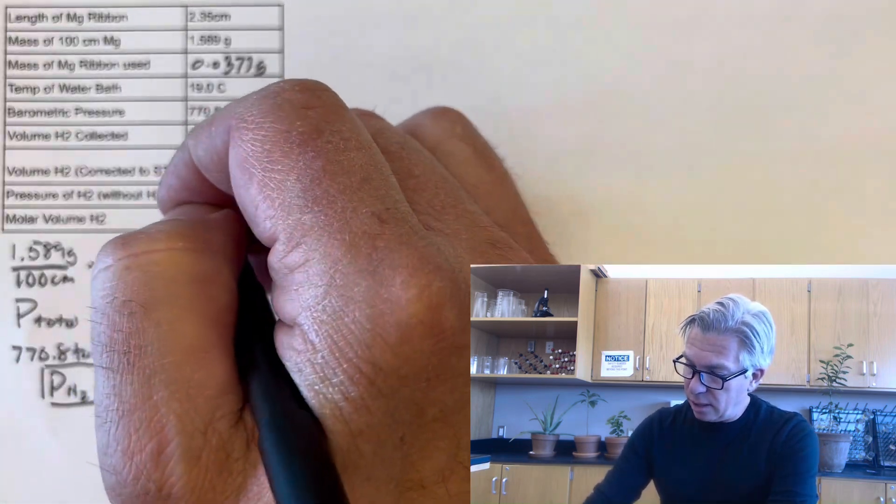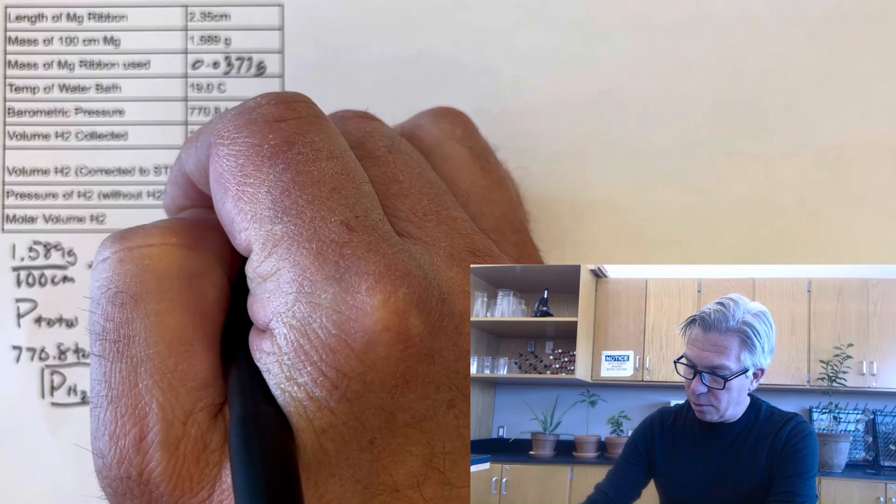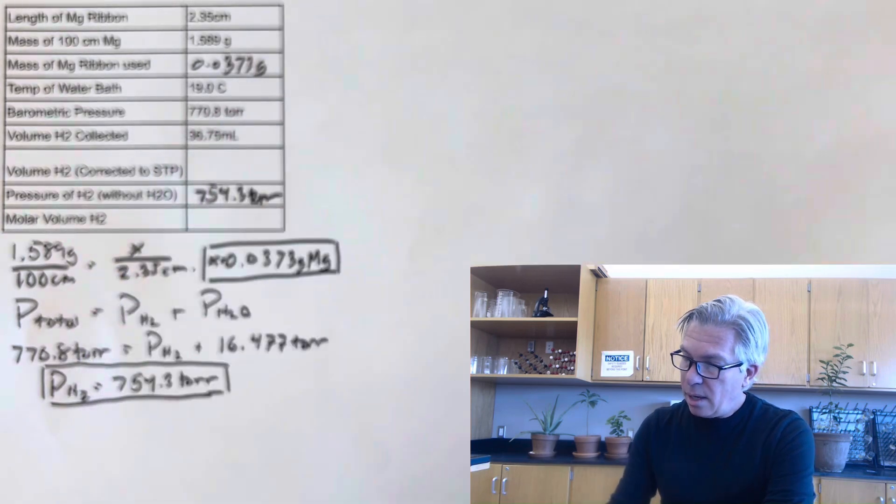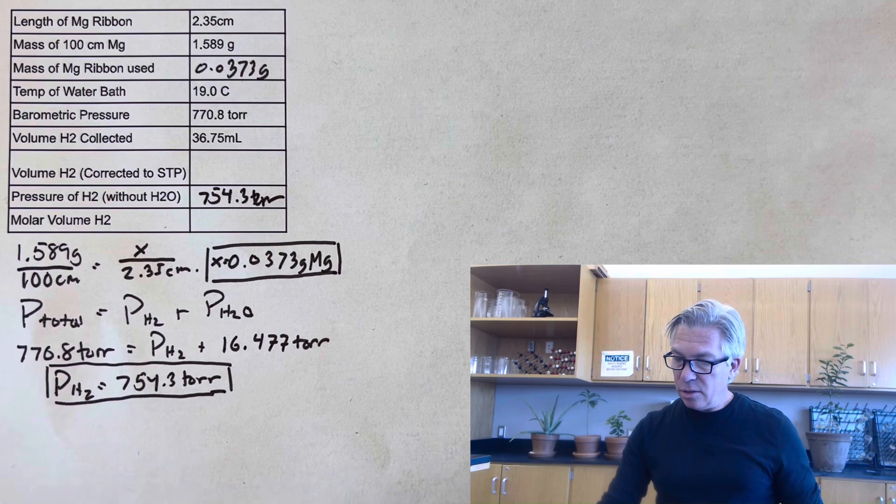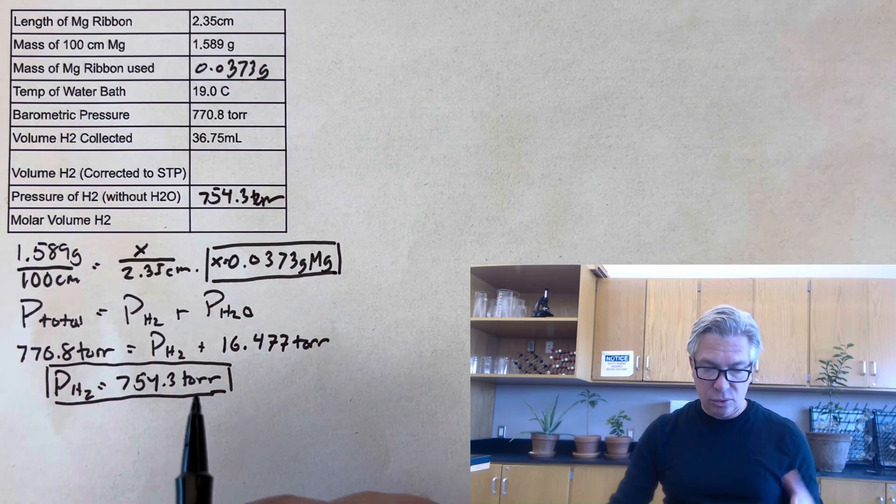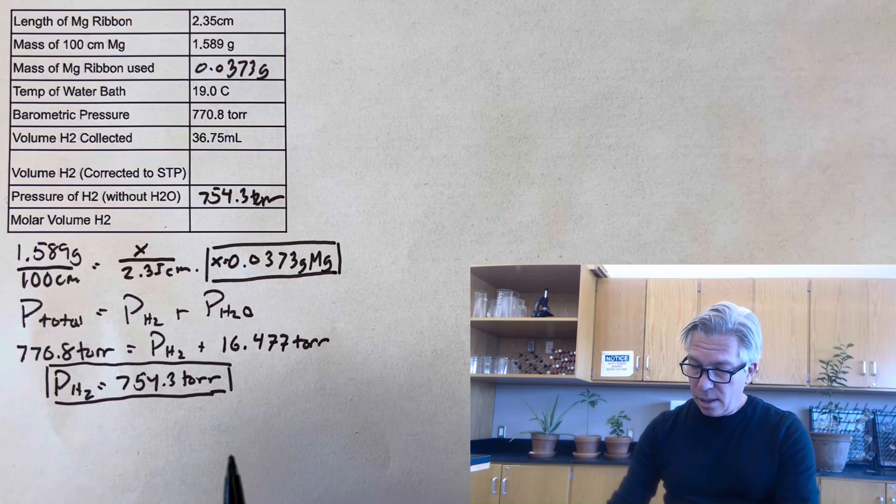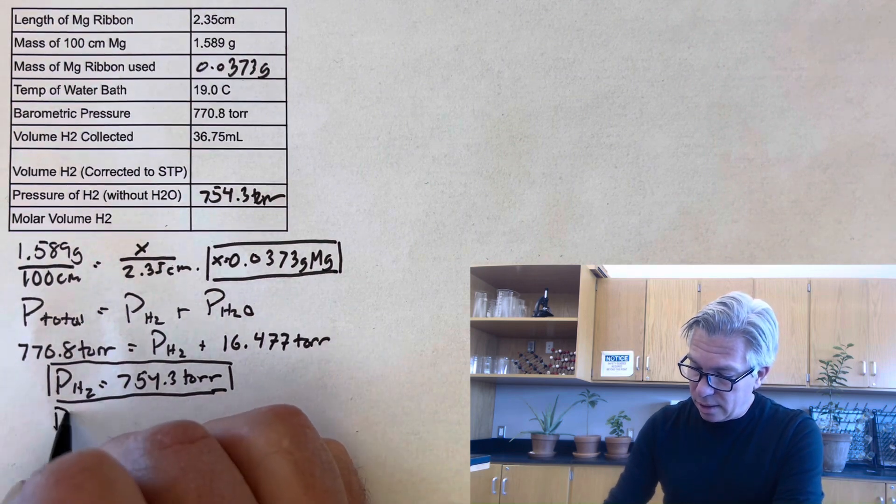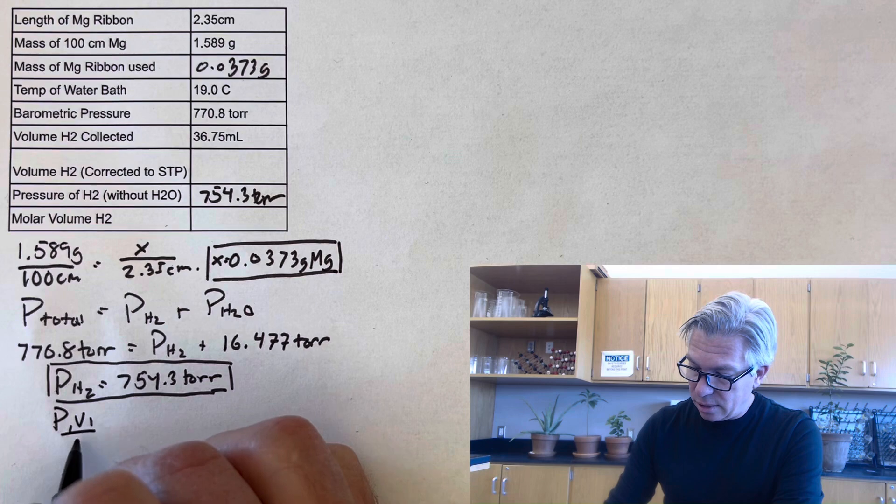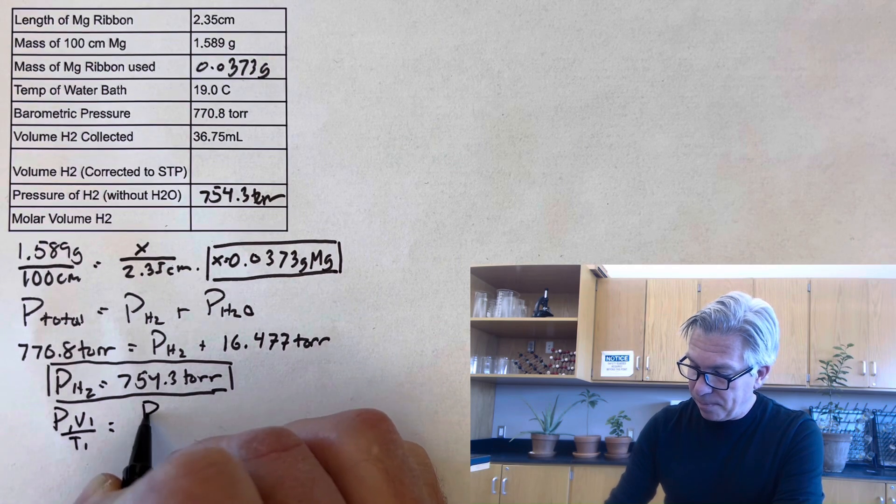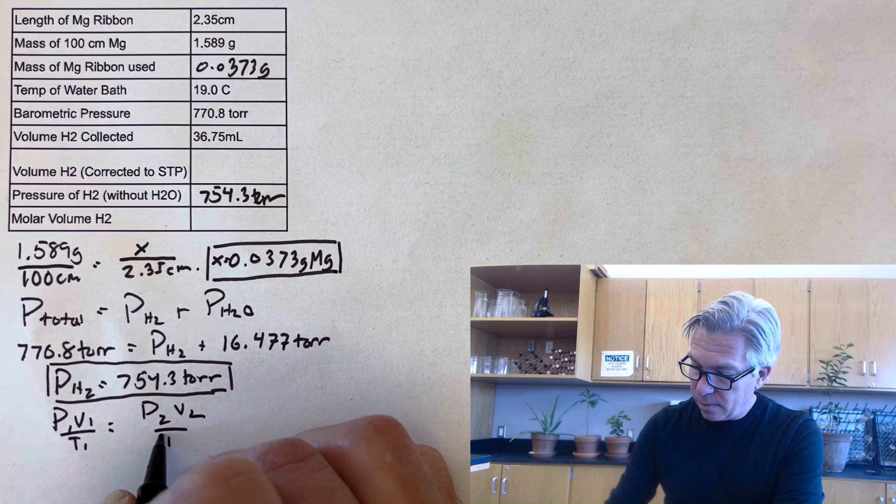And next thing I'm going to do is I want to correct the volume to STP because that's our baseline. That's our standard. And what we're going to do then is use the combined gas law or sometimes called the general gas law. Okay, and I know the volume of my gas at this pressure.